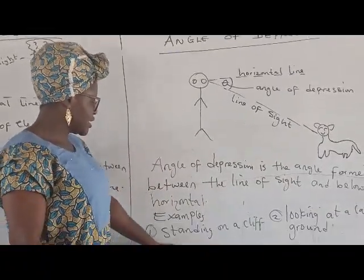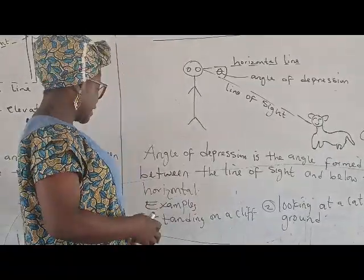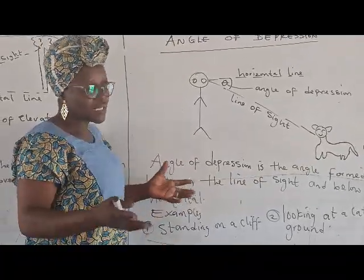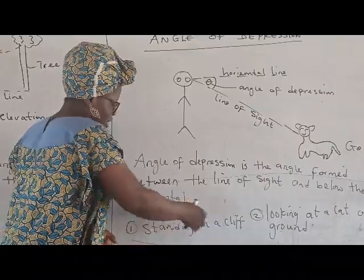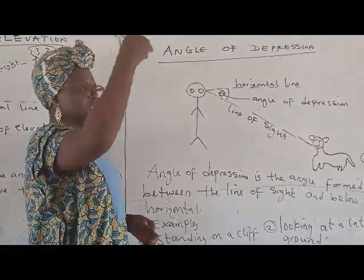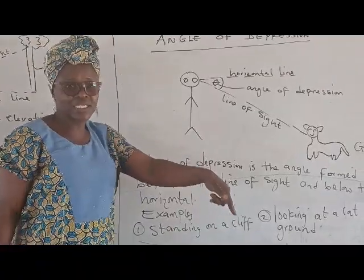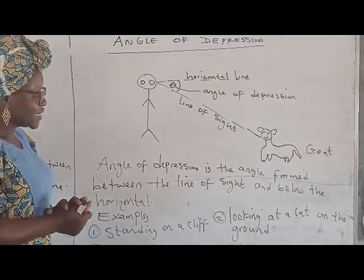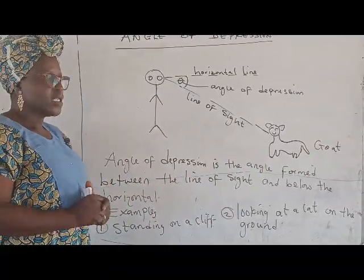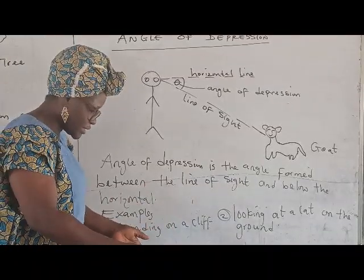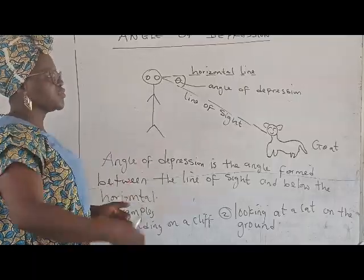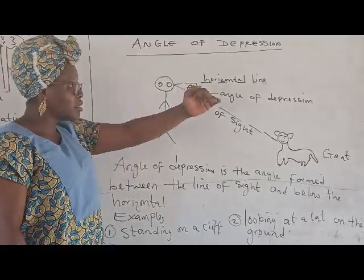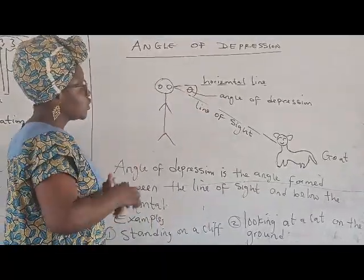We have some examples. If I'm standing on a cliff — a cliff is a rock usually very close to a river bed and is always elevated — and I decide to look at an object below that cliff, the angle formed is the angle of depression. The second example: if there is a cat standing in front of me and I choose to look at that cat, the moment I shift my focus from my normal line of view, the angle formed between my horizontal and the line of sight is what is called the angle of depression.